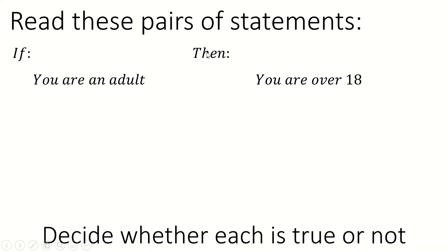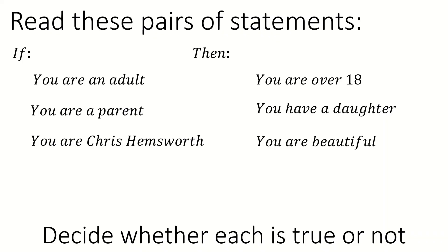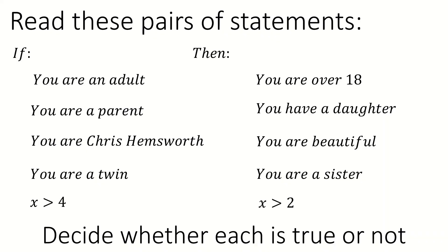If you are an adult, then you are over 18. Think about whether that's a true statement or not. Then move on to the next one: if you are a parent, then you have a daughter — decide whether that statement is true. Keep going. Always read it as if/then for each one, including the fifth statement on the screen.